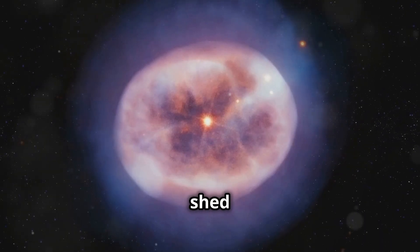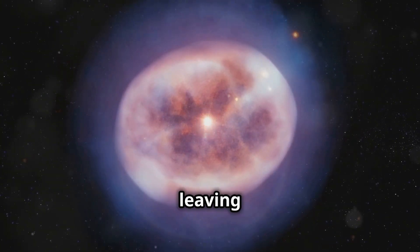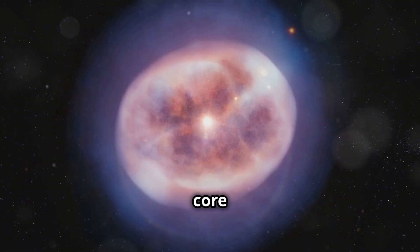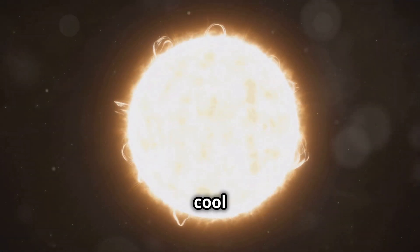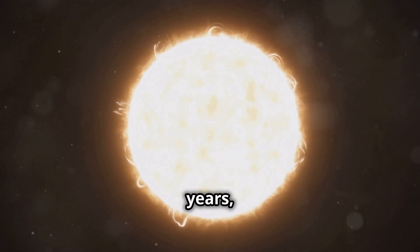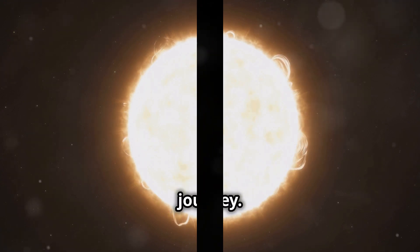Eventually, the sun will shed its outer layers, creating a beautiful planetary nebula and leaving behind a dense, hot core known as a white dwarf. This white dwarf will slowly cool and fade over billions of years, marking the end of the sun's life cycle, a quiet conclusion to its long journey.